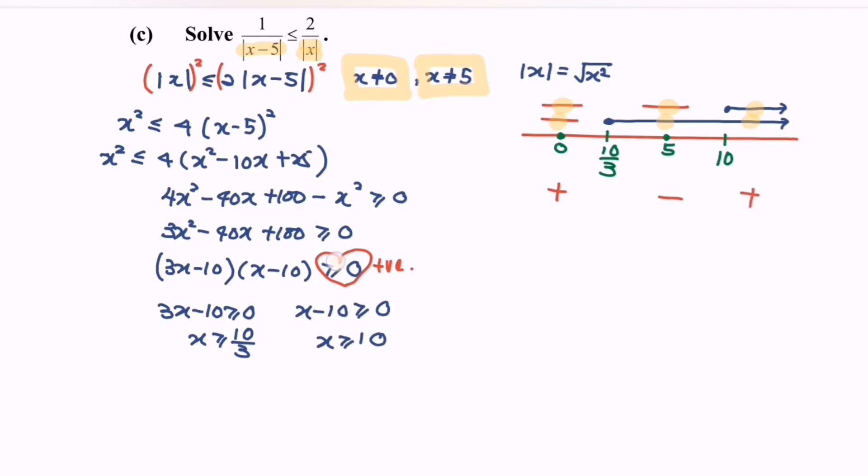So refer to the sign in here. We wish to have a positive sign. So here will be the location. Kindly take notes, 0 is not included. So rewrite our answer: negative infinity until 0 where 0 is not included, union from 0 until 10 over 3 where 0 is not included as well, union from 10 until infinity where infinity is not included. So this is the interval form.